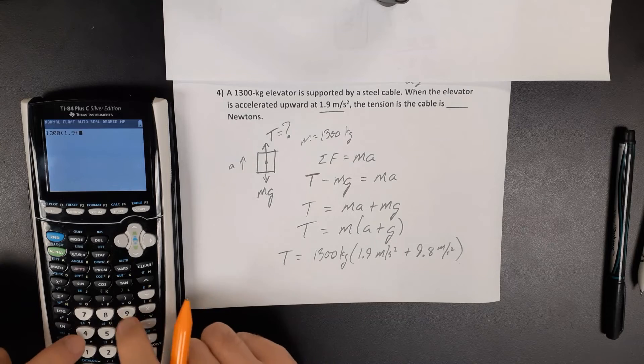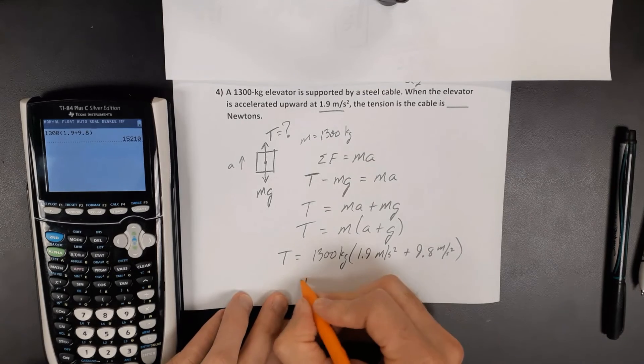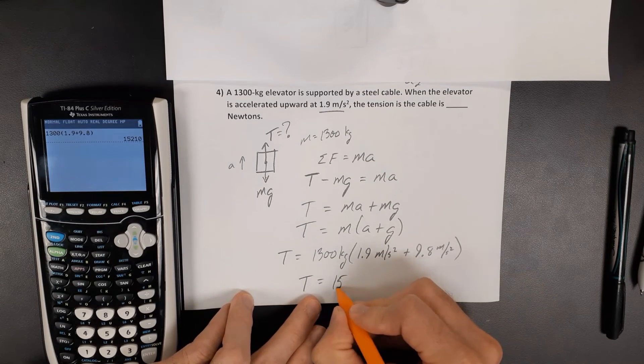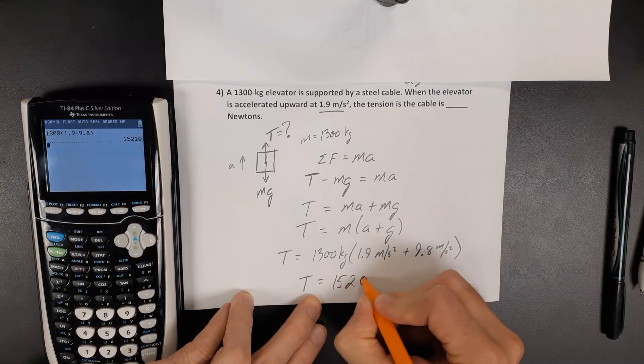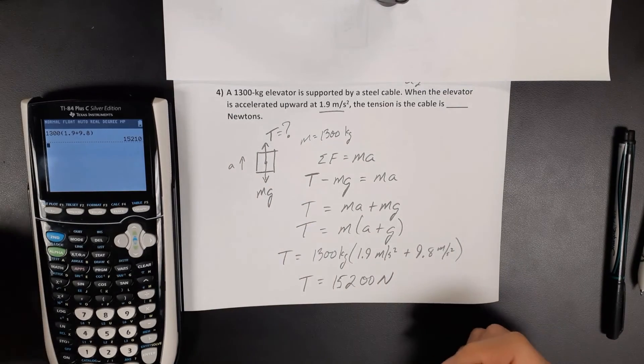1.9 plus 9.8 times 1,300 gives me a tension of 15,000. I'm going to round this a little bit to 15,200 newtons. The calculator says 15,210, but rounded to 15,200 newtons of tension.